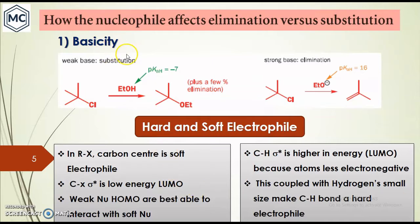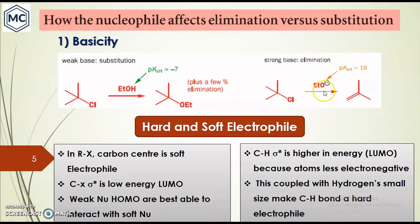So let us see what are the factors that affect elimination versus substitution reaction. One key important factor is basicity. In the case of a tertiary substrate, we have seen that in the presence of a weak base — for example ethanol — it undergoes substitution rather than elimination. But if you are using a strong base, it undergoes elimination.